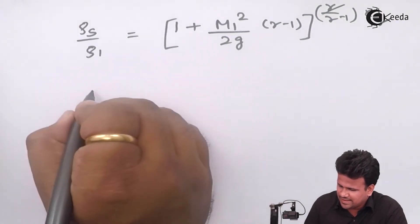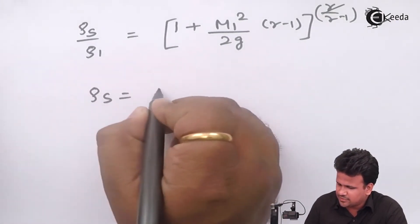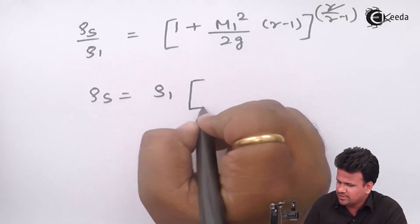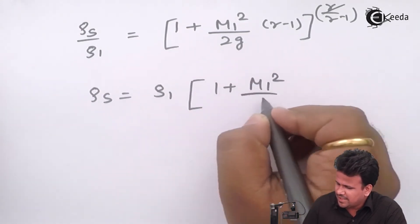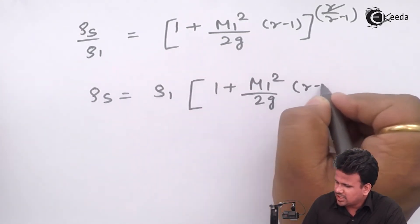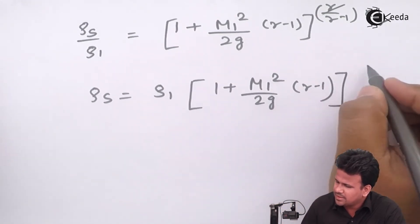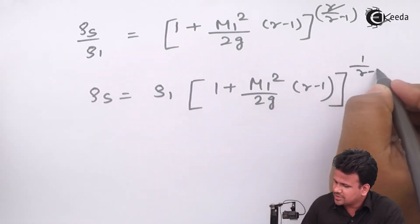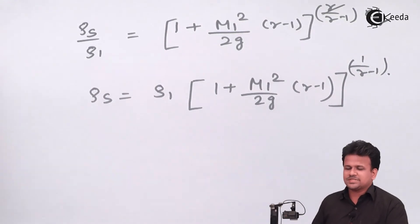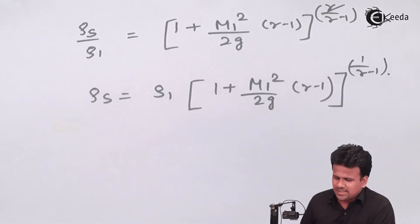This is stagnation density, the density of the fluid near the tip of the aircraft. I hope you have understood how to calculate stagnation density from stagnation pressure. Thank you.